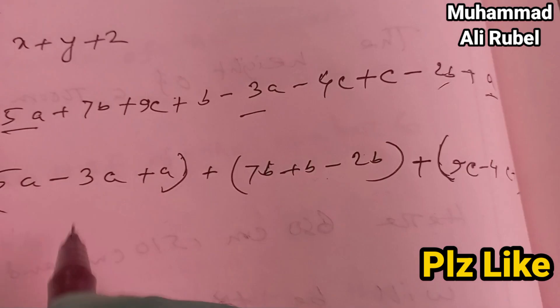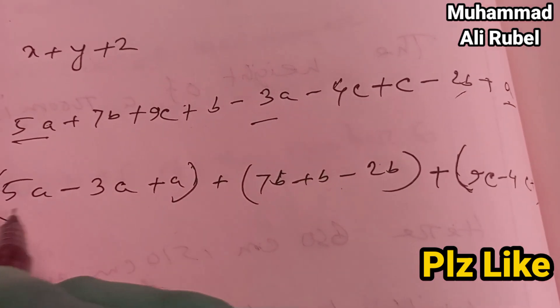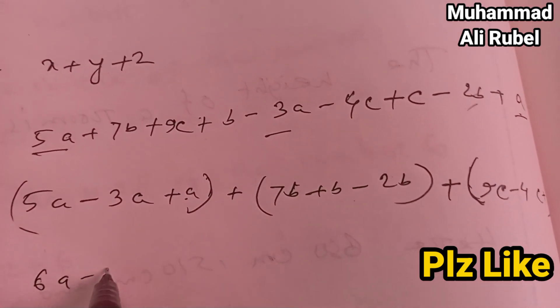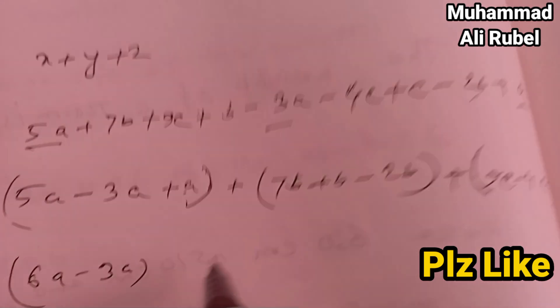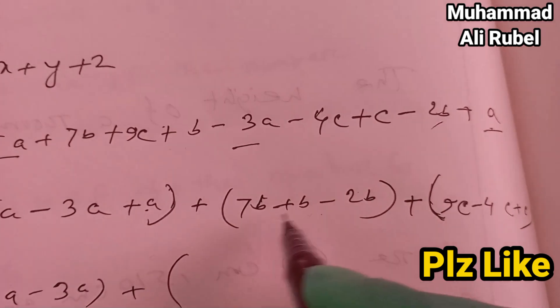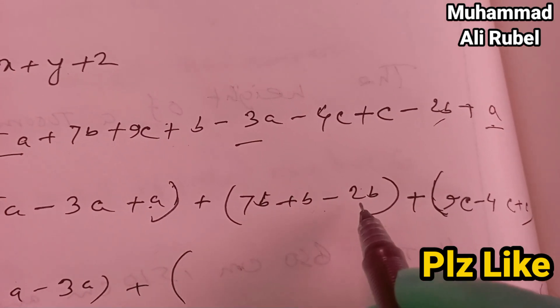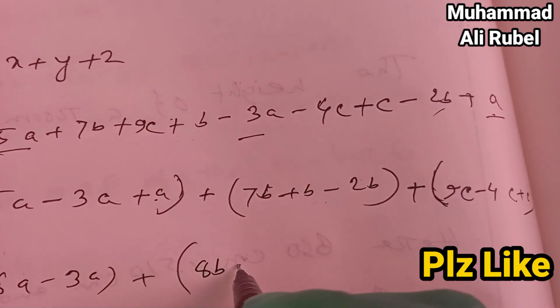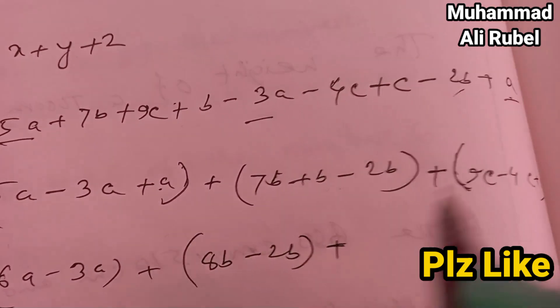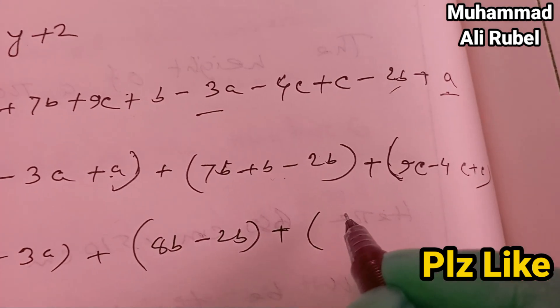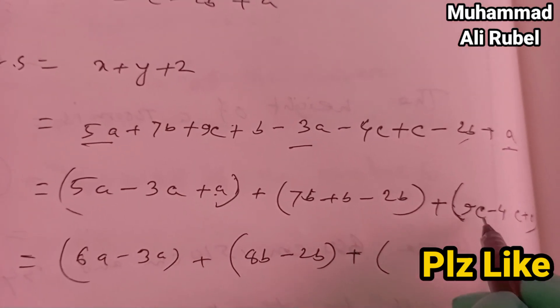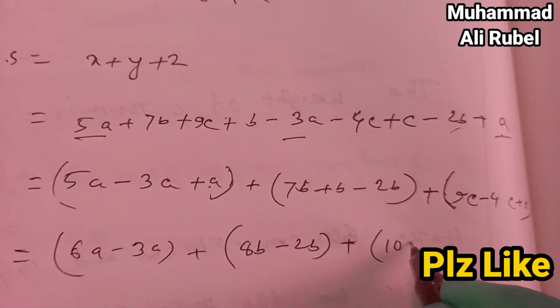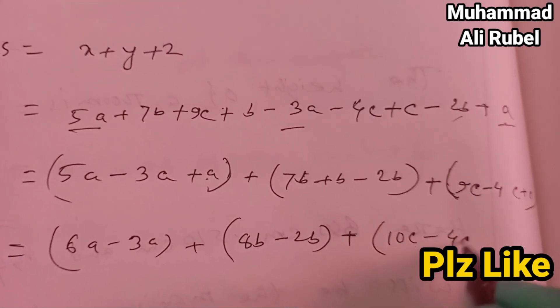So look, 5a and a is 6a, minus 3a. Plus 7b plus b is 8b, minus 2b. 9c plus c is 10c, minus 4c.